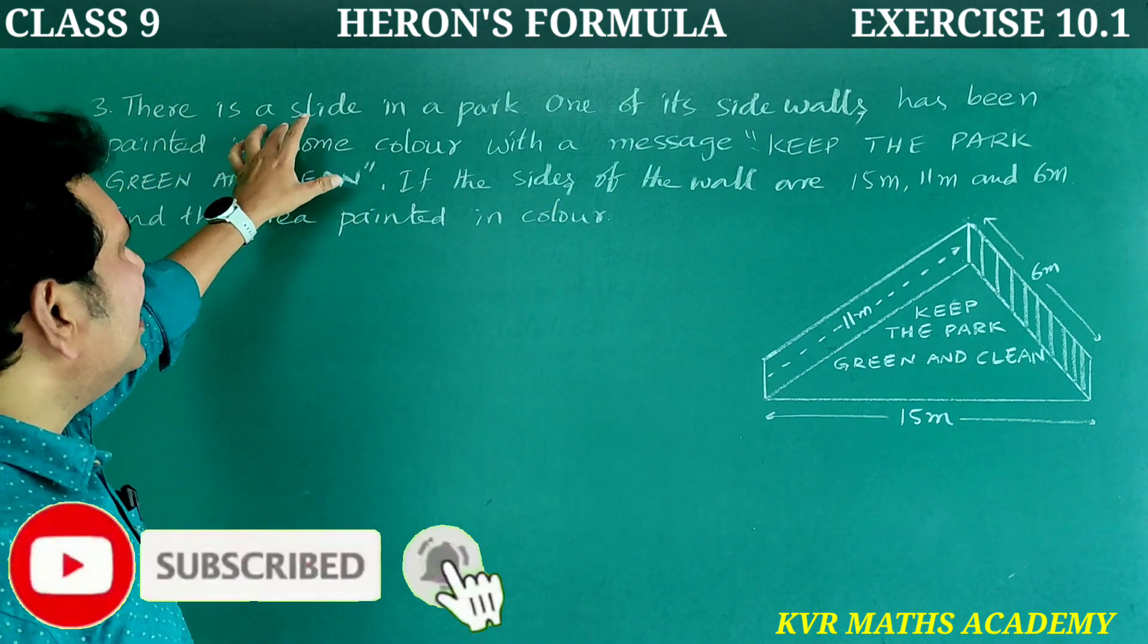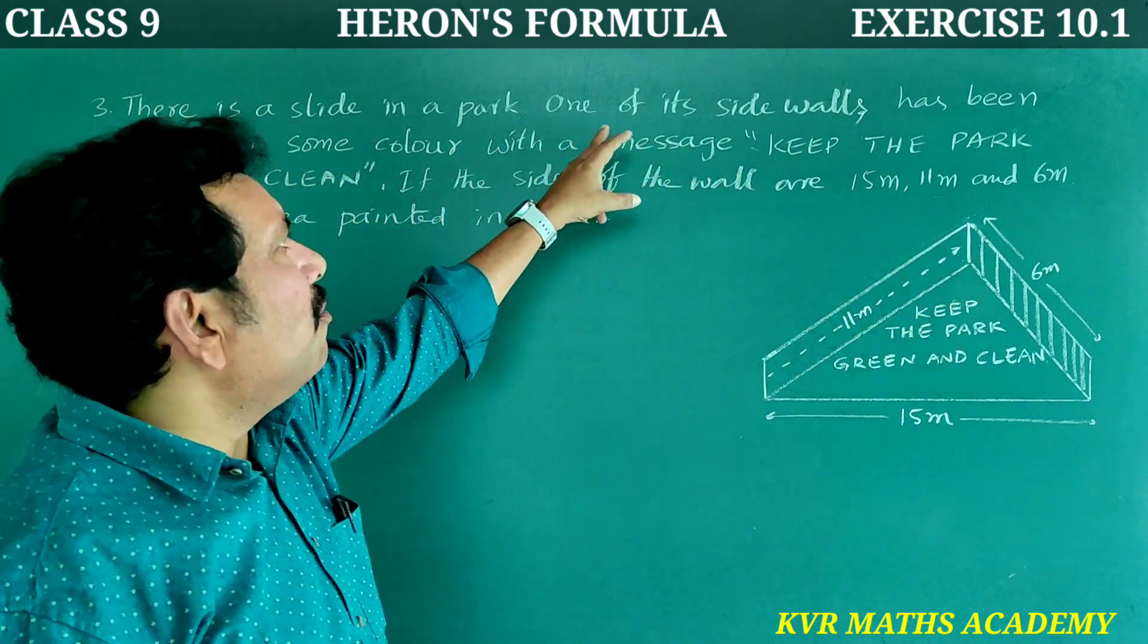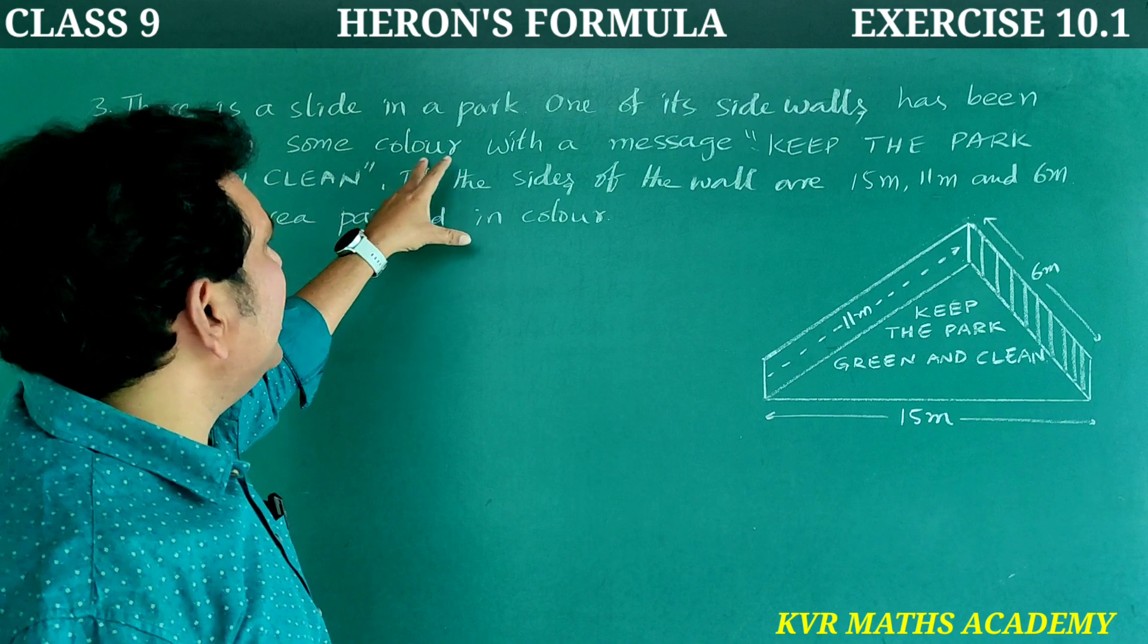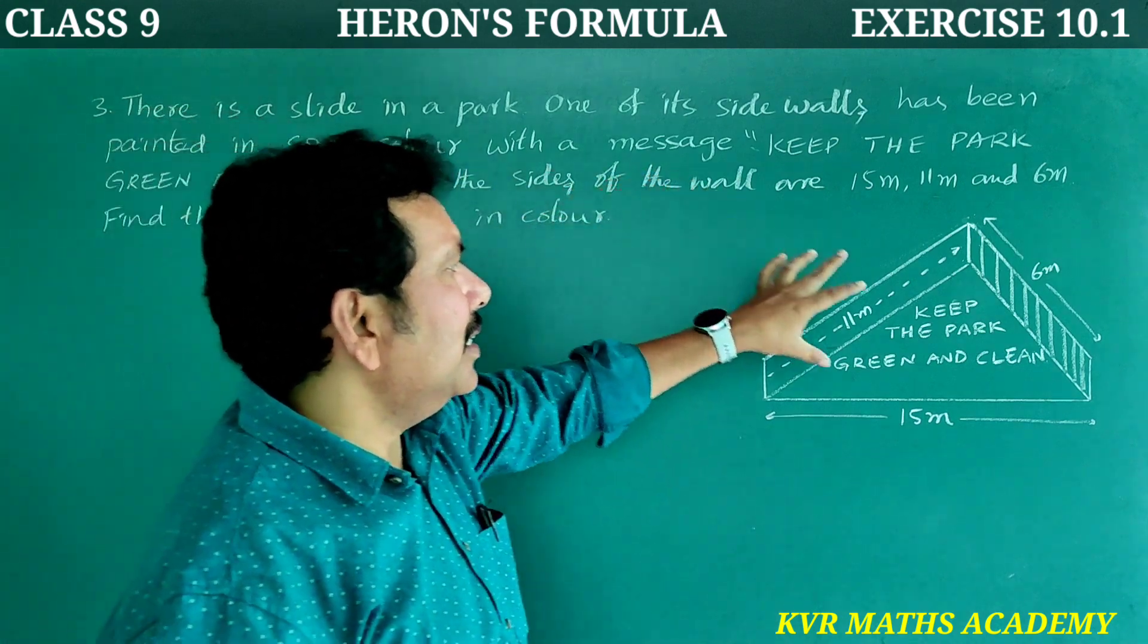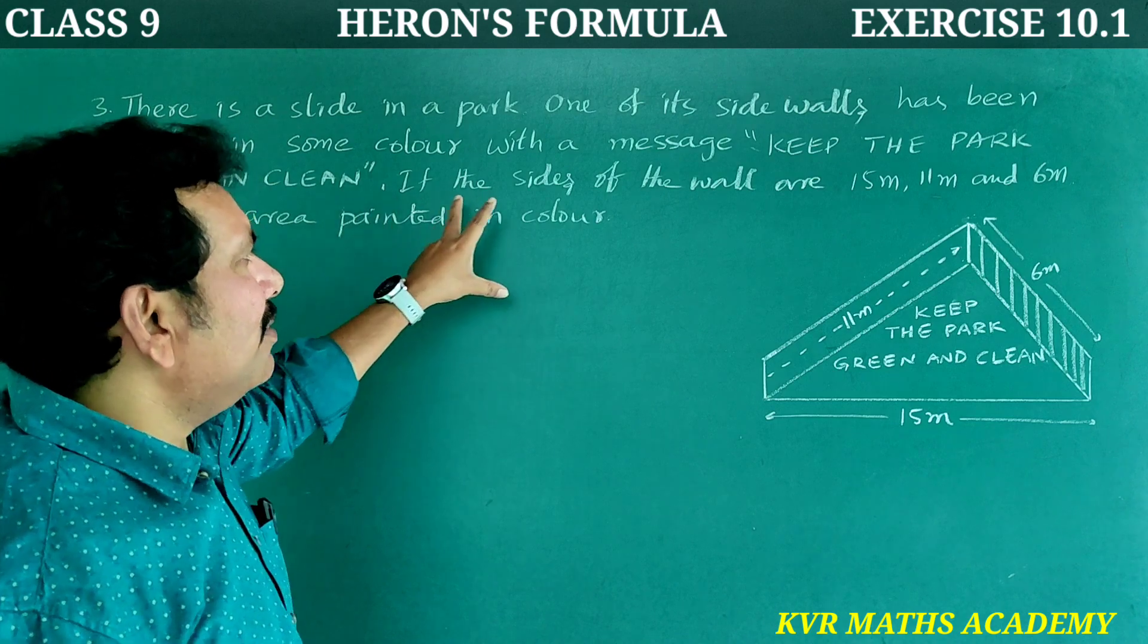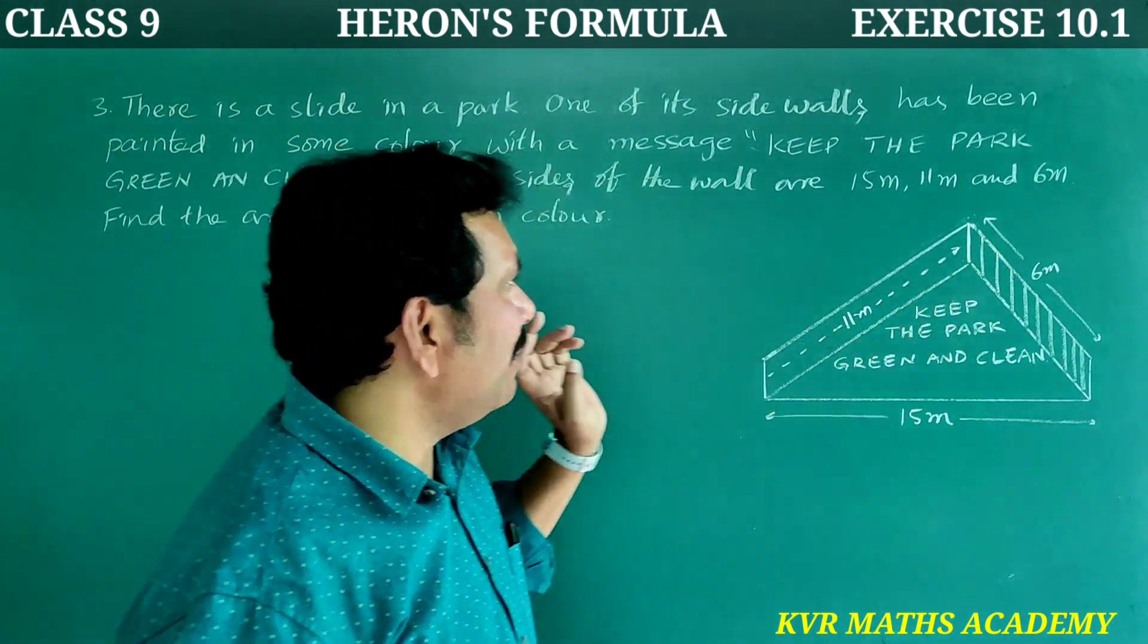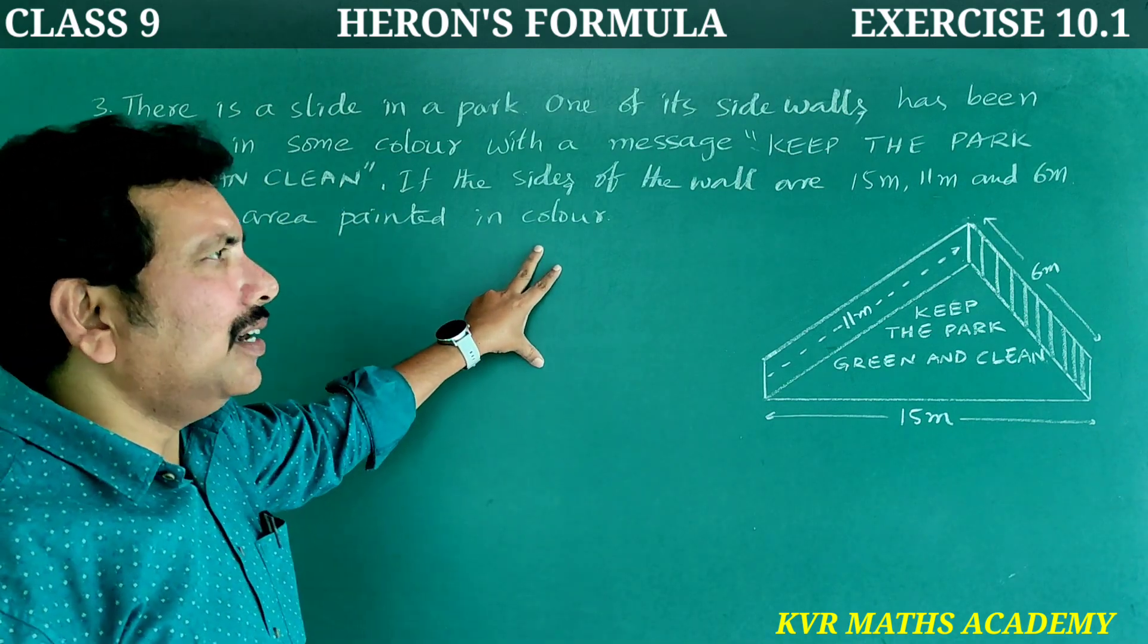Right? Come again. There is a slide in a park. One of its sidewalls has been painted in some color with a message: Keep the park green and clean. If the sides of the wall are 15 meters, 6 meters, 11 meters. So, find the area painted in color.